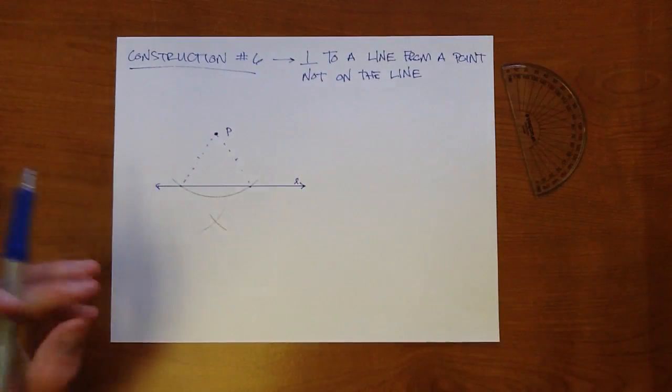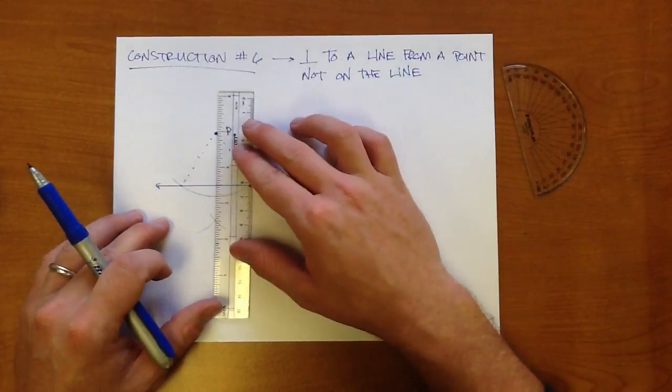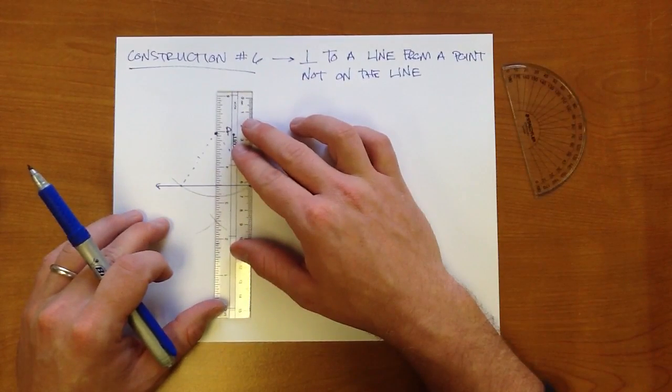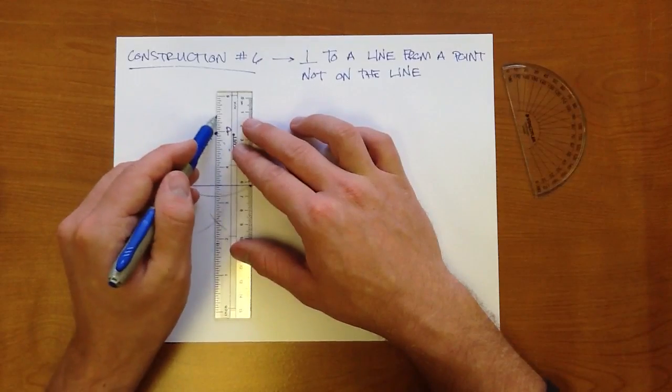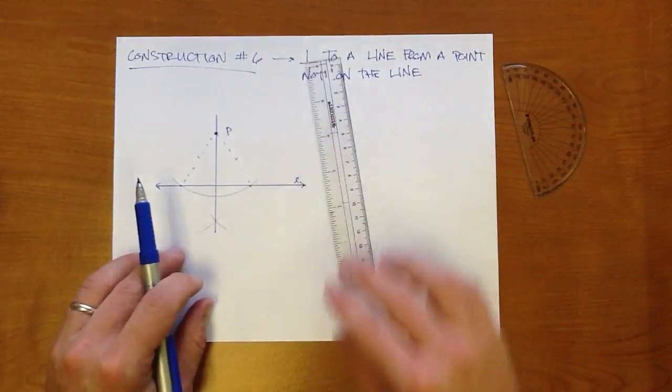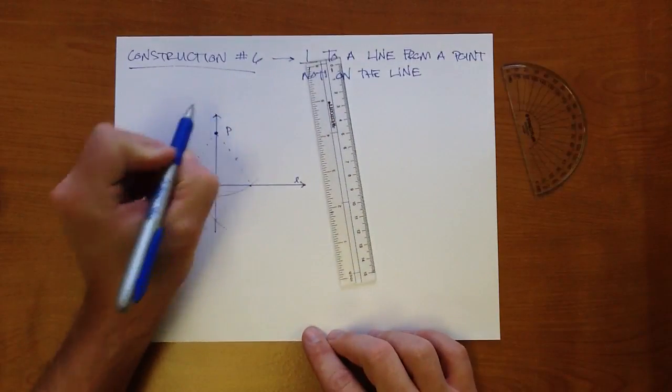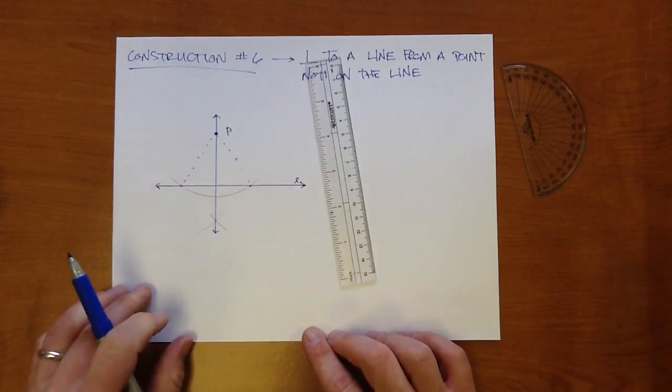So now what we have is another intersection point that should be along the center of that segment. So when you draw a line connecting point P with that intersection of arcs, this line right here should end up being perpendicular to line L.